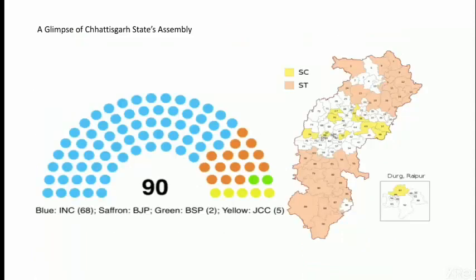Here you can see the Chhattisgarh state assembly. The dots represent the constituencies in the legislative assembly. Nearly 68 blue dots represent the Indian National Congress; the saffron-colored seats, 15 in number, represent the BJP; 2 seats represent the BSP; and the yellow ones represent the JCC. Since INC won 68 seats, the Indian National Congress is the ruling party, and BJP, BSP, and JCC are the opposition parties.